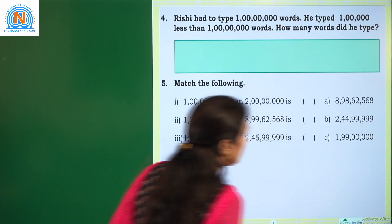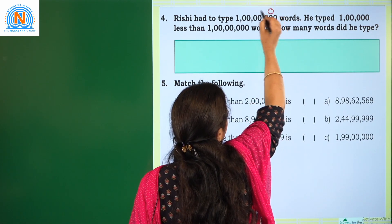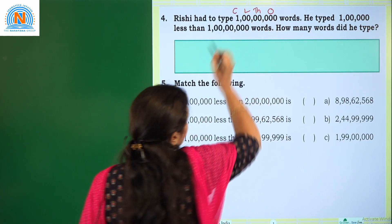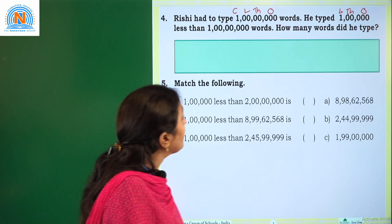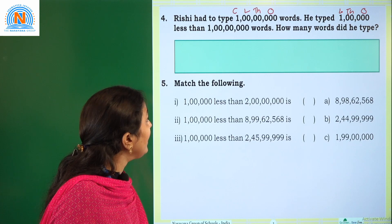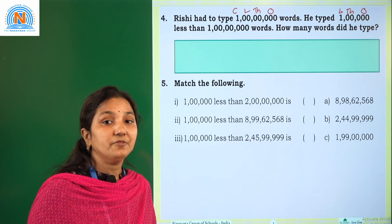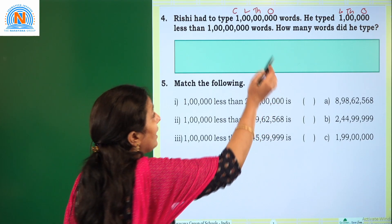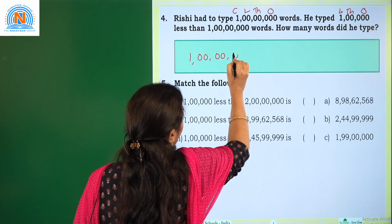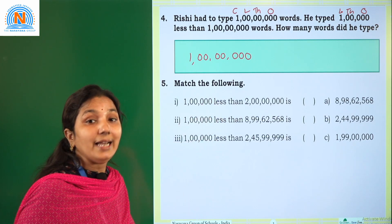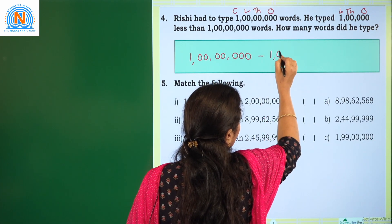Coming to the next one. Rishi had to type 1 crore words. He typed 1 lakh less than 1 crore words. So how many words did he type? We have to find how many words he typed. He was supposed to type 1 crore words but typed 1 lakh less than 1 crore, meaning we have to take away 1 lakh from 1 crore.